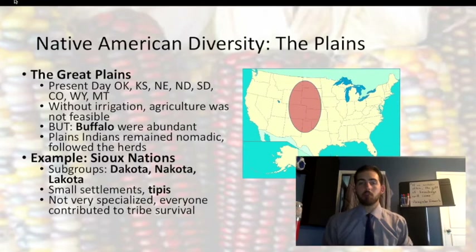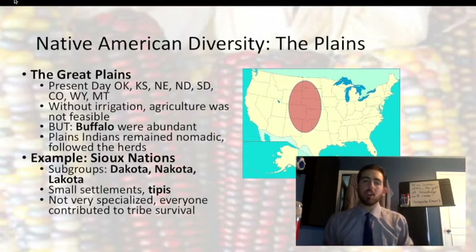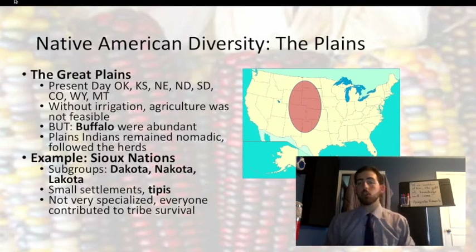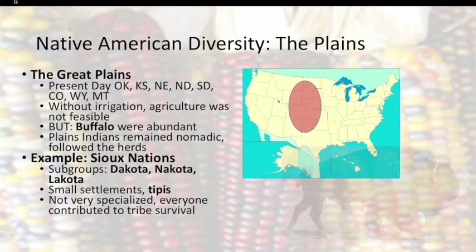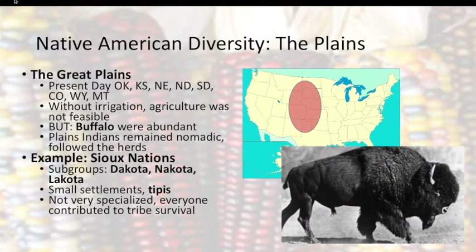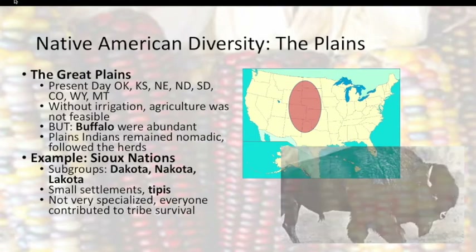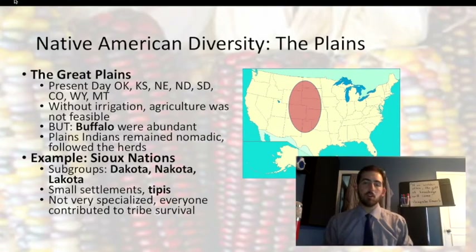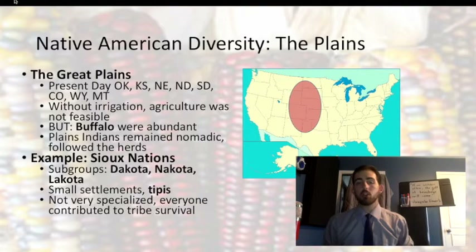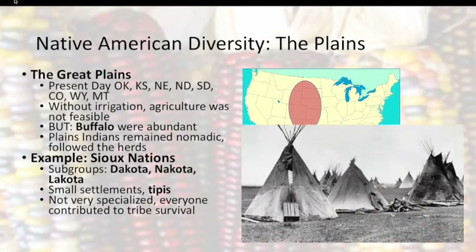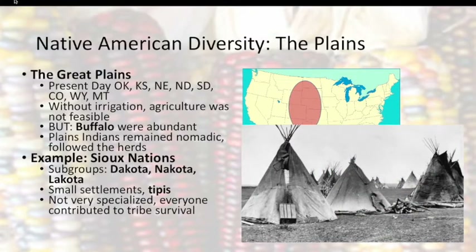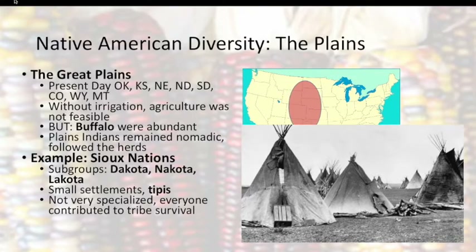Similar to the Great Basin tribes were the American Indians of the Great Plains. In the absence of modern farming and irrigation techniques, the soil and climate of the Plains could not sustain agriculture. As a result, the tribes of the Great Plains were also nomadic. Their lifeline was the buffalo, and the animal provided food, clothing, housing, and materials for tools. The tribes of the Sioux Nation — the Dakota, Lakota, and Nakota — lived in temporary homes called tipis and followed the herds throughout the year. While the Sioux tribes were extensive, the demands of the nomadic lifestyle required all members to contribute to the survival of the community, and specialization within the society was rare.